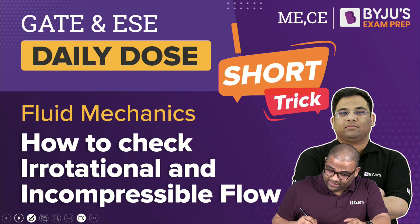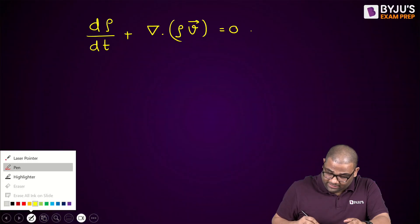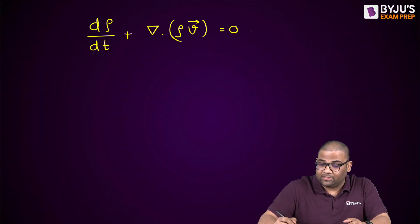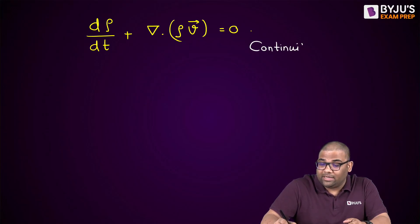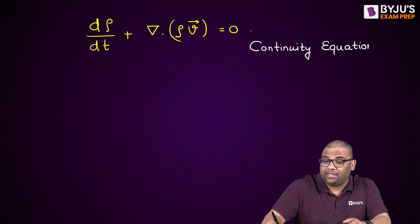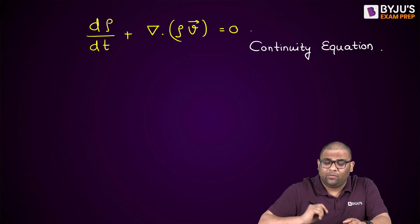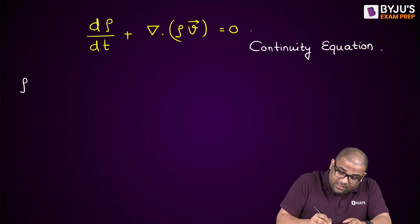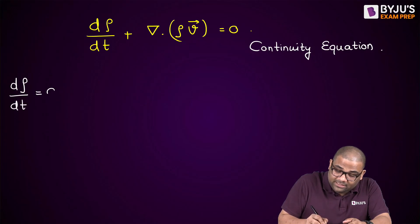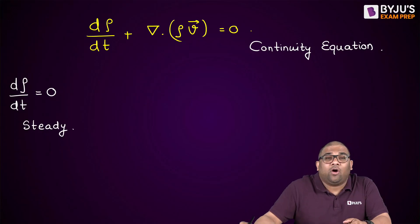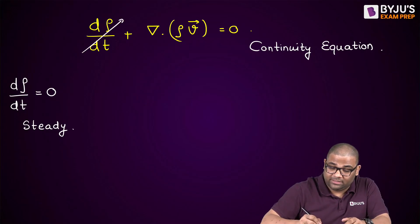First of all, to check incompressible flow, it comes from the continuity equation. This is the continuity equation. When the flow is steady, the density does not change with respect to time. So for steady flow, the differentiation of density rho with respect to t becomes 0.